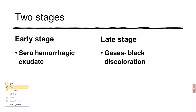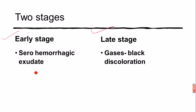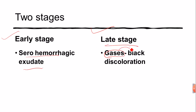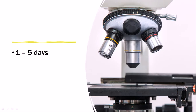There are two stages of the disease. In the early stages, serohemorrhagic exudate occurs. In the late stages, gases accumulate, causing discoloration — black coloration — of the muscles.